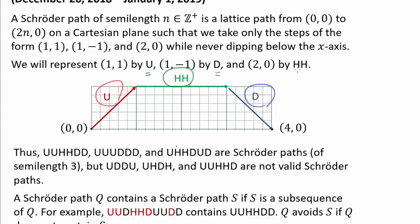So we have up, down, and we have double horizontal. So in this case we are going from (0,0) to (4,0). So in this case our n is 2, so we have an example of a Schröder path of semi-length 2 shown right here.